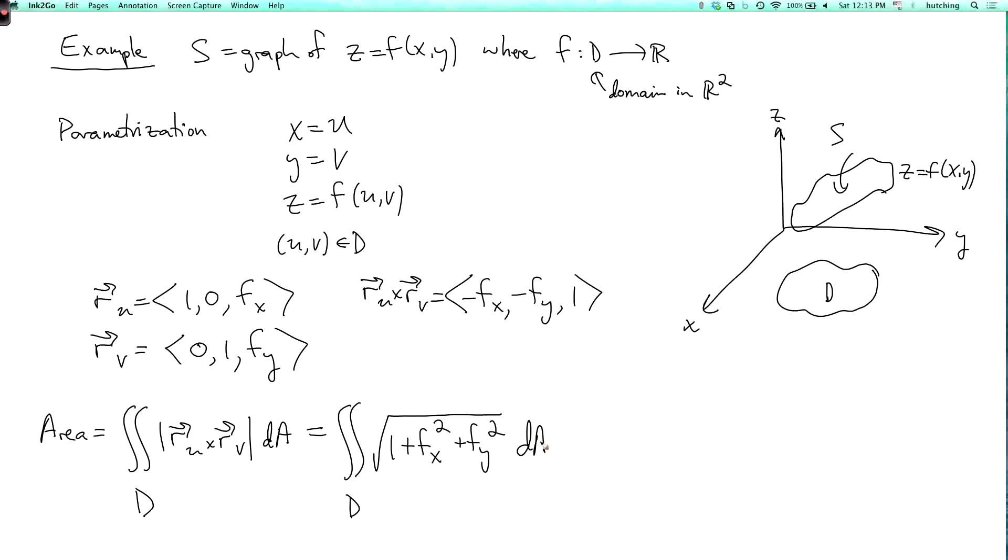So its magnitude is the square root of 1 plus f_x squared plus f_y squared. So this agrees with the formula that we got before. And our formula for the area of a general parametrized surface is a generalization of this to surfaces which are not necessarily graphs. As long as you can parametrize them, you can still calculate their areas.